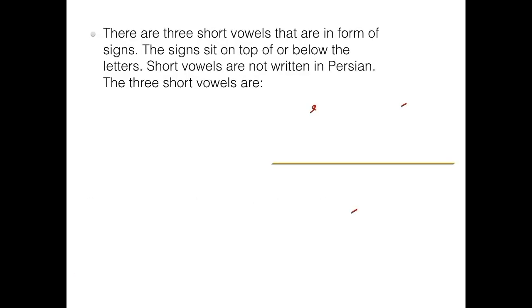There are three short vowels that are in the form of signs. The signs sit on top of or below the letters. Short vowels are not written in Persian.